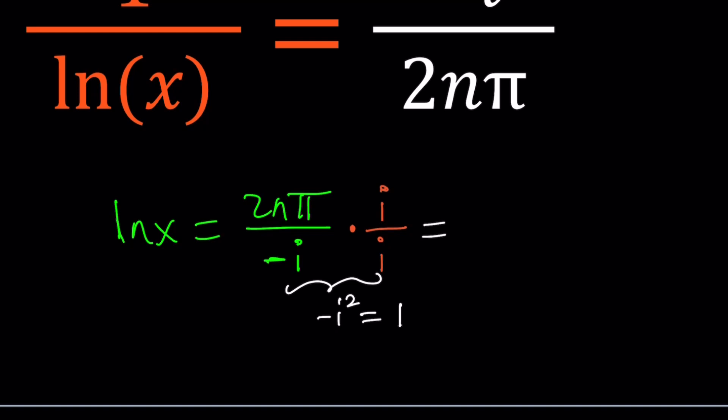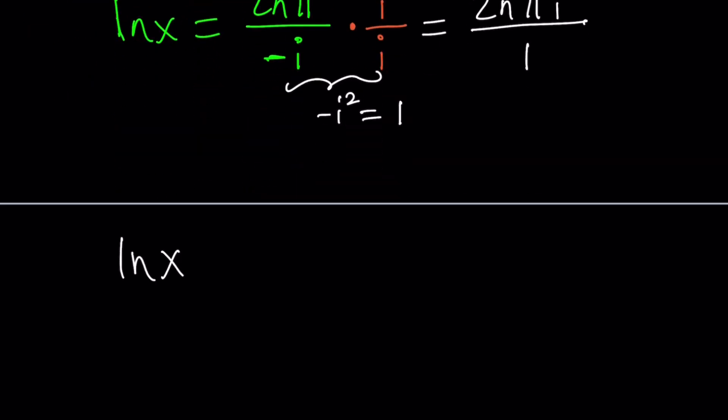So, what am I getting? 2nπ. Of course, when you multiply by i, you also have to multiply the top. So that's going to give us 2nπi divided by 1, or just 2nπi. Make sense? Let's go ahead and rewrite it. ln(x) equals 2nπi.